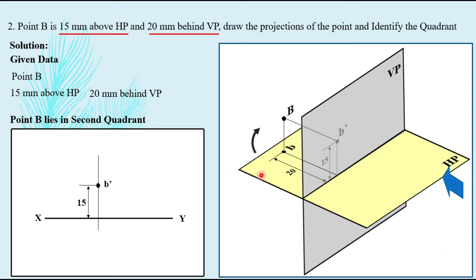Rotate the horizontal plane clockwise 90 degrees. Since this plane overlaps with the vertical plane, the top view of B will also be seen above XY line — 20 mm above XY line — and you locate the top view of B. Remember, all distances are counted from the XY line only. Also note that the smaller dimension is placed inside and the larger outside, to avoid any intersection of extension lines with dimension lines.